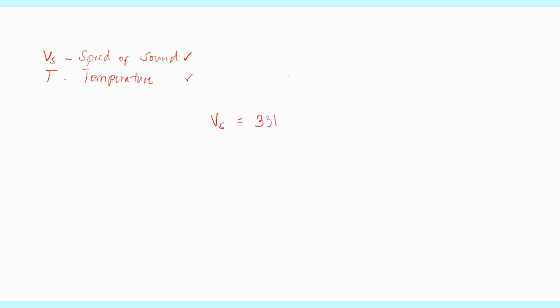With those two basic rules, we will now realize that the two important variables for this lesson are the speed of sound, which is represented by Vs, and the temperature, which is represented by capital letter T. We can now derive the basic formula for this lesson: Vs is equal to 331 meters per second plus temperature times 0.6 meters per second. The 331 m/s is your base velocity — the velocity of sound if the temperature of the air is 0 degrees Celsius. The 0.6 m/s is what you add to the speed of sound as the temperature increases by 1 degree Celsius.